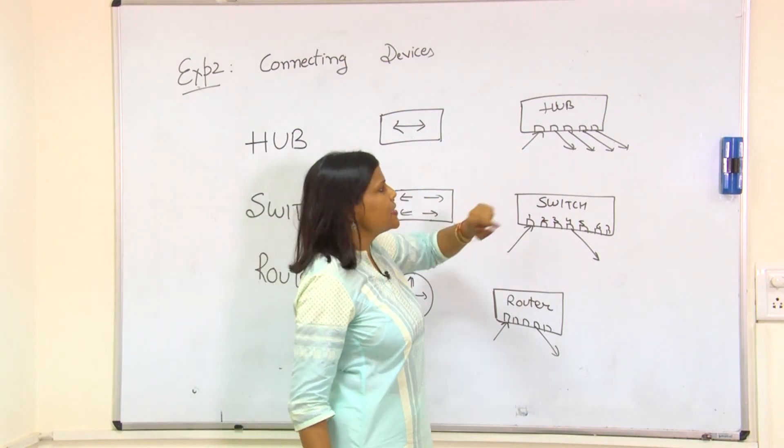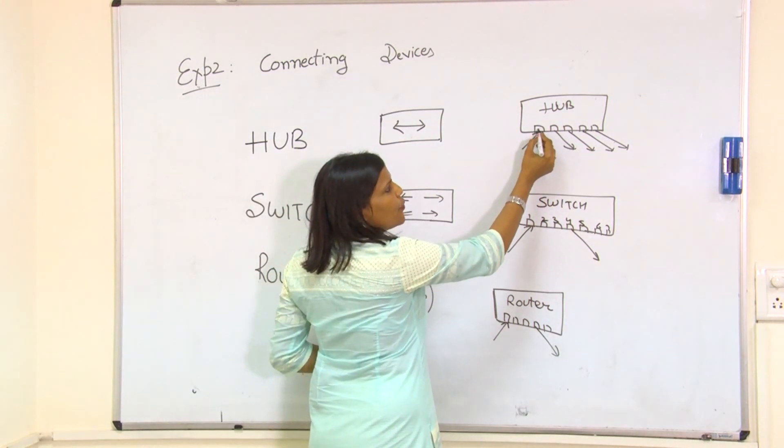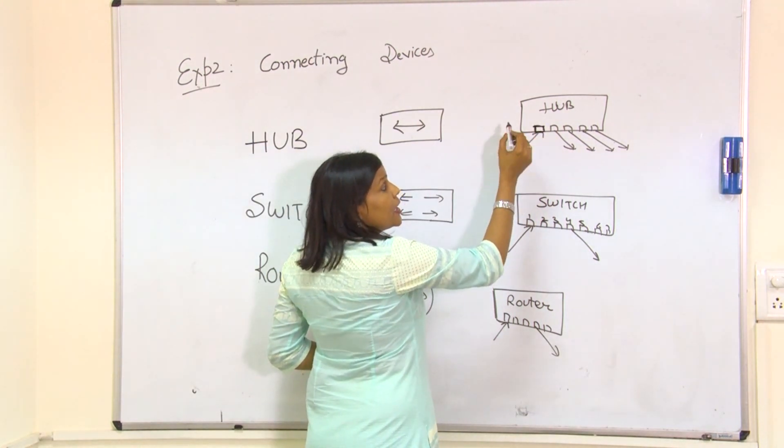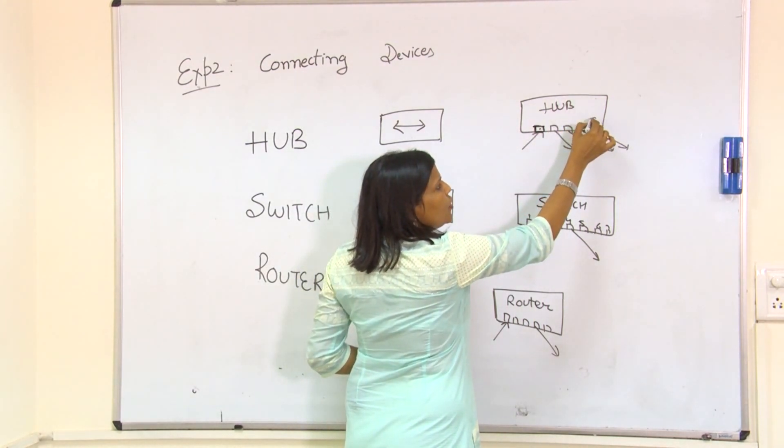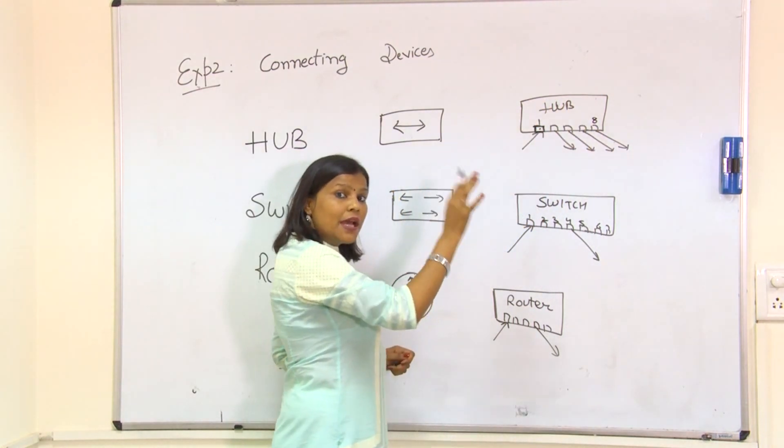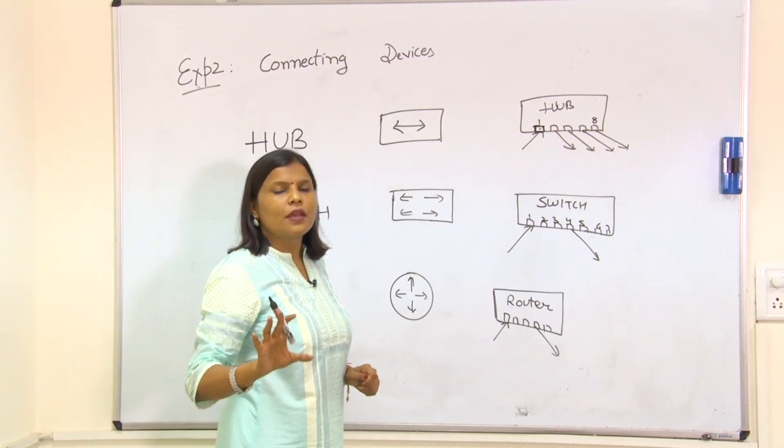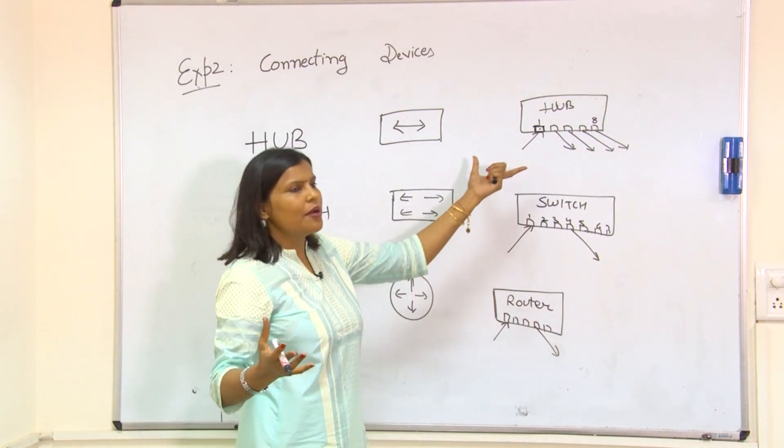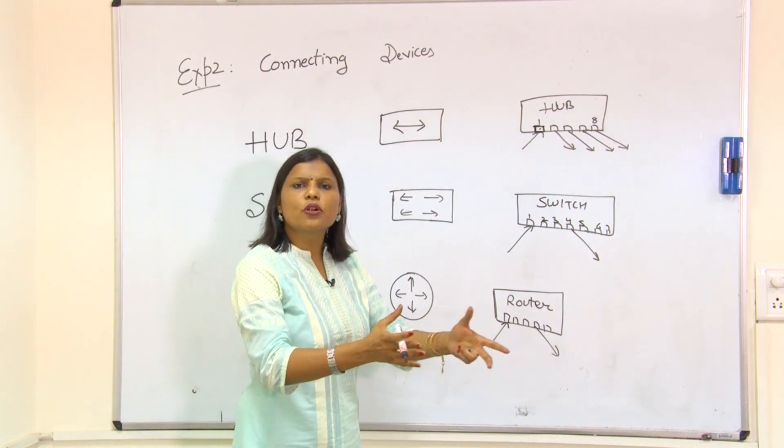But the problem with hub is this: if one computer on a port wants to send a message only to port number 8, the hub will deliver the message to all ports. Hub doesn't think, it doesn't process, it will just broadcast the message to all ports.